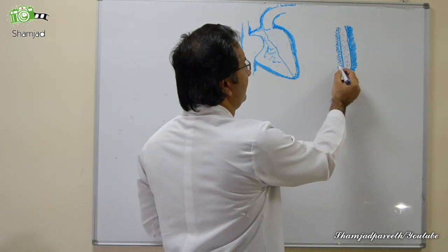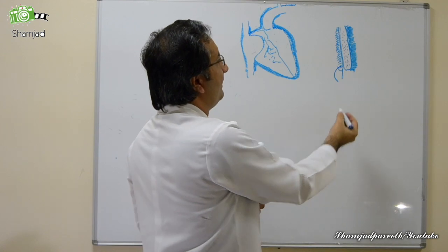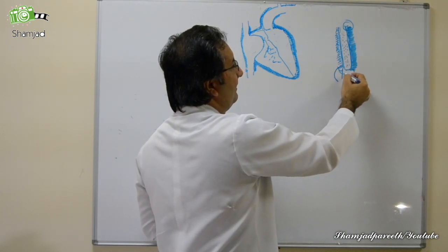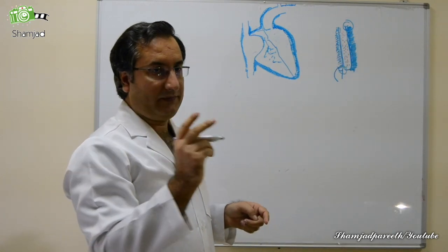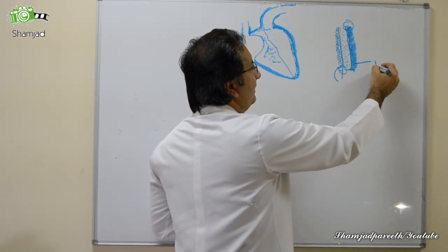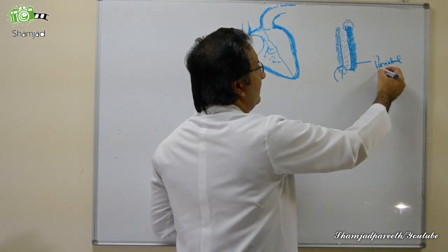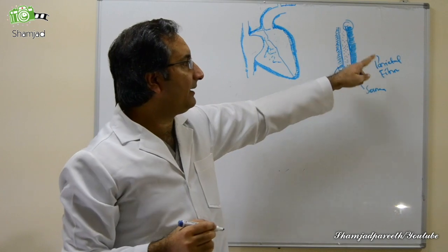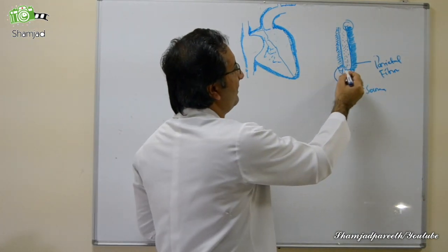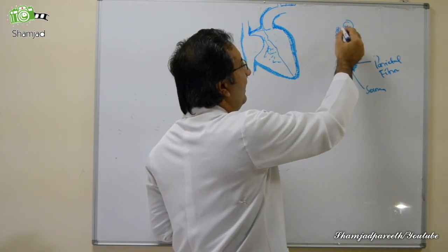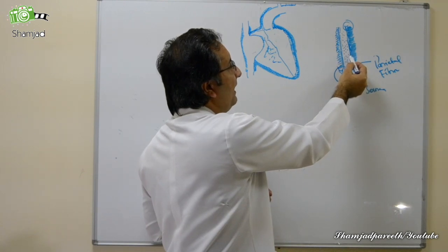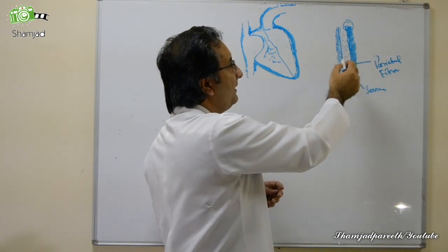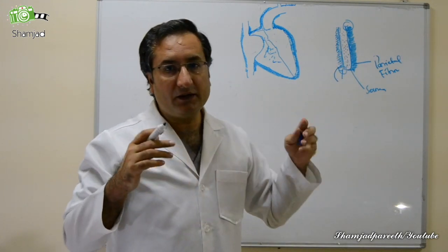Looking at a cross-section of the pericardium: the cardiac chamber is covered by the epicardium. The pericardium has two parts — a parietal part and a visceral part. The parietal part has two layers: an outer fibrous part and an inner serous part. This serous part continues over the epicardium, and between the parietal serous pericardium and the visceral part, there is the pericardial space, which normally contains fluid.